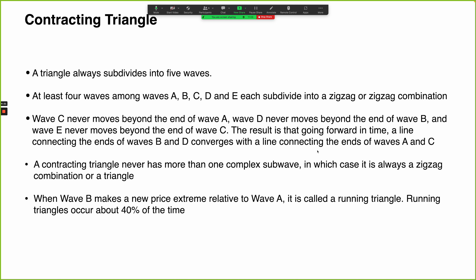Sometimes wave E will subdivide itself into a triangle, though this is quite rare. There's one fairly recent example we can take a look at in Euro dollar. By and large, the sub-waves will be zigzags. So if you're counting one of the sub-waves of the triangle as a flat, you've done something wrong — either you've counted the sub-wave incorrectly or you're not actually dealing with a triangle. Wave C in a contracting triangle never moves beyond the end of wave A, wave D never moves beyond the end of wave B, and wave E never moves beyond the end of wave C. That's how we get those converging trend lines and how the pattern earns its name.